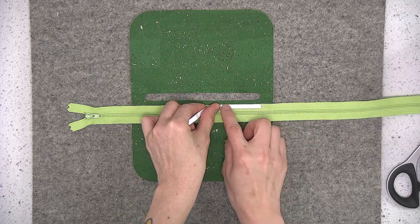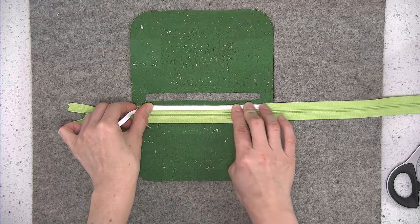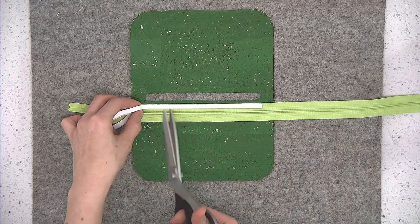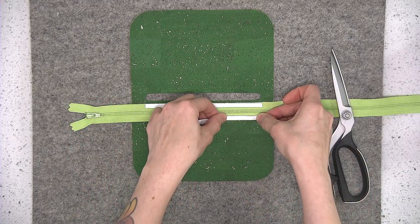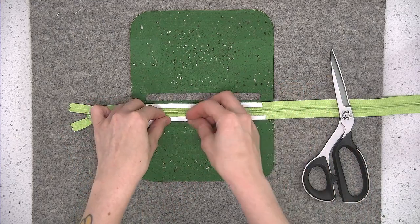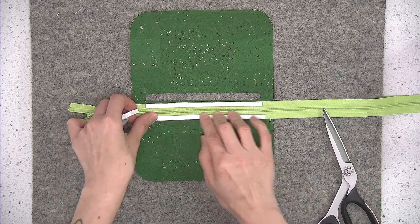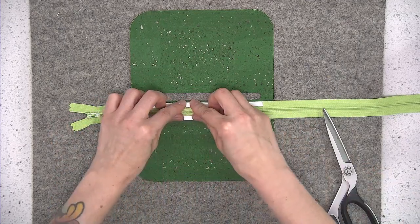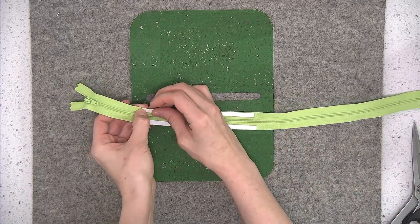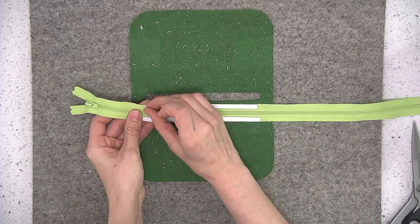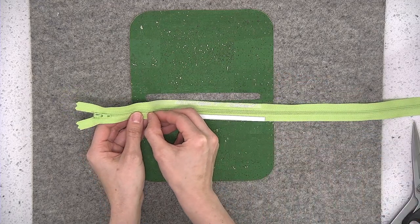I'm going to stick down the first edge of the Dritz Wash-Away Tape along the long edge of the zipper, and you only need as much tape as there is the opening. I'm also going to use my fingers to give it a bit of pressure so that I can remove the paper. That tape just peels back and reveals the second side of the adhesive, and then we can go ahead and stick that to the wrong side of the fabric.